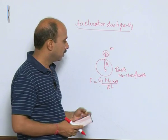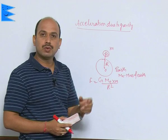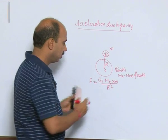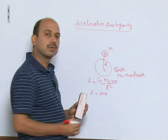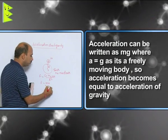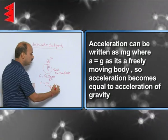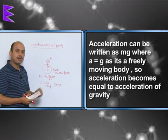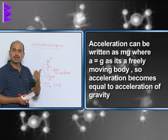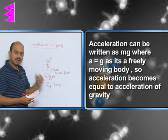When it is dropped, it falls downward, it has acceleration. So we can write, F is equal to also m into a, but this acceleration we can write m into g, because here body is falling freely. So acceleration will be equal to acceleration due to gravity.